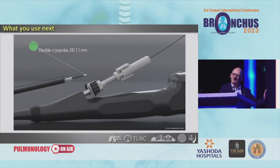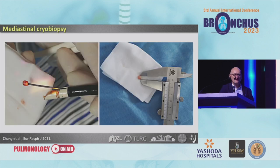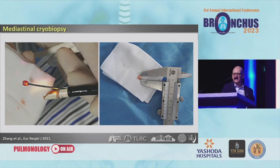What is the next step is the launch of the small, slim cryoprobe — 1.1 millimeter — so you really can use it through the working channel of a slim EBUS scope. And that is new: you also can use it through the working channel of an EBUS scope. So this is mediastinal cryobiopsy, something which is new.